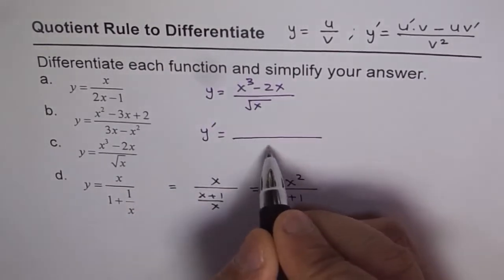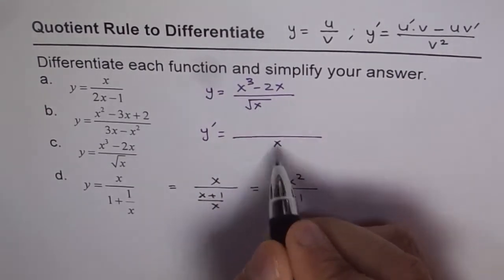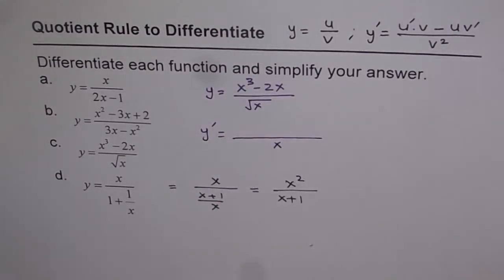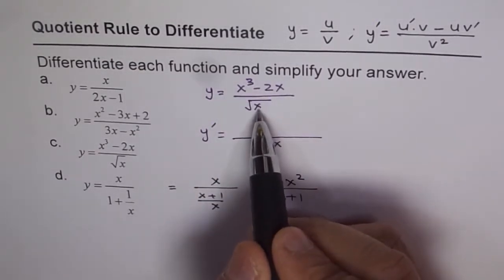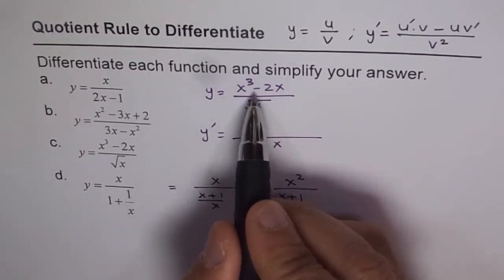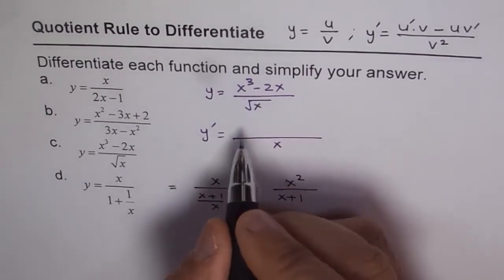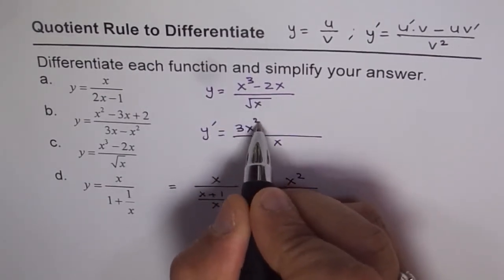first write the square of denominators, so square root square will be just x. And now, write derivative of the first function. Here u is the numerator and v is the denominator. So the derivative of numerator is 3x square minus 2.